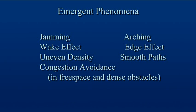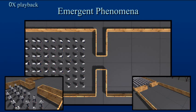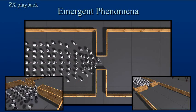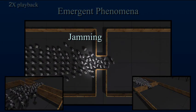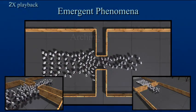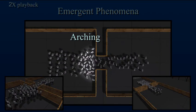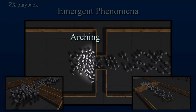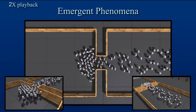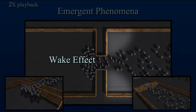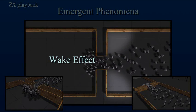Using PLE, we observe many of the common emergent phenomena in crowds. Here we show three such phenomena: jamming, arching, and the wake effect. As multiple agents converge on a narrow passage, they interfere with each other, obstructing the flow. Jamming leads other agents to pile up behind them. The stalled agents form a semicircular arch around the narrow passage. Finally, as agents leave the narrow passage, they disperse only as necessary, leaving the corners near the passage empty.